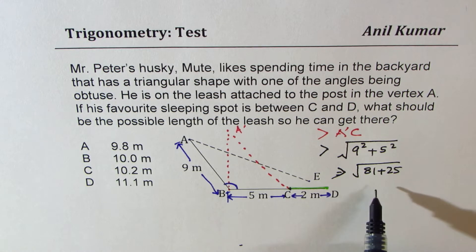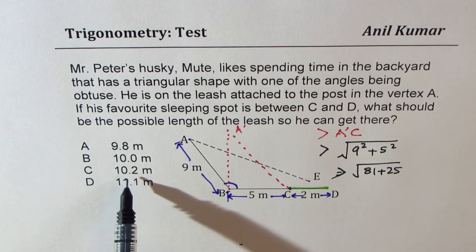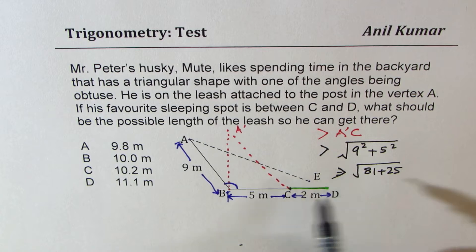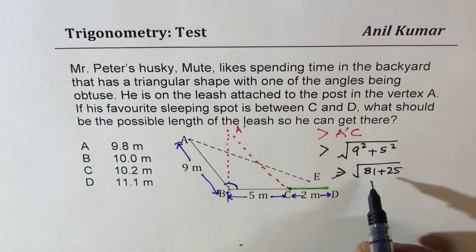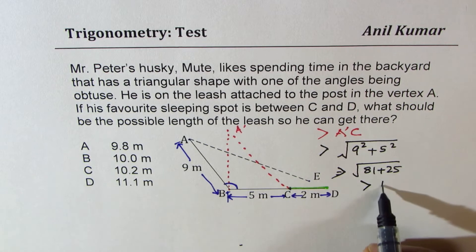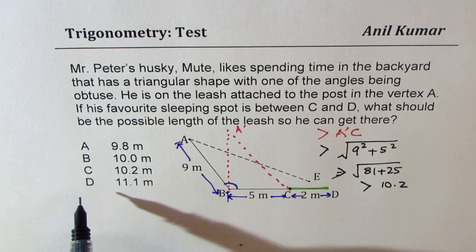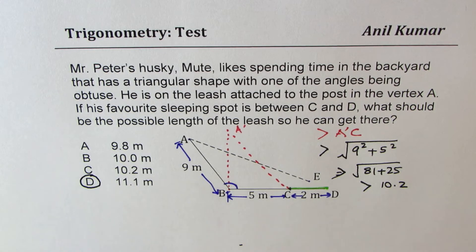Since this is more than 100, we have choices which are like 10 is 100, 10.2 is slightly more than 100. However, it is much more than that, right? So we know it should be more than even 10.2. So that gives us option D as the right option. Perfect.